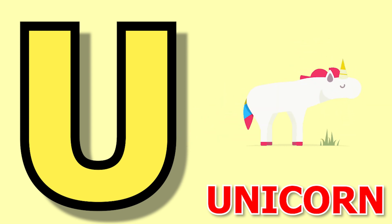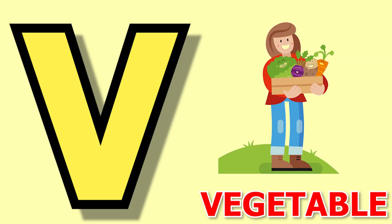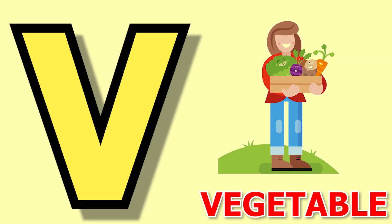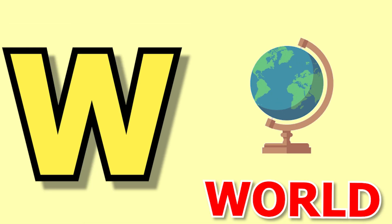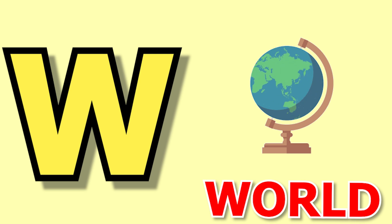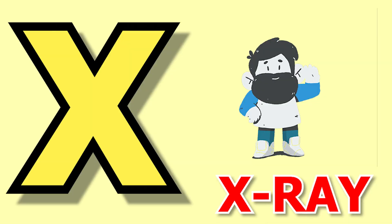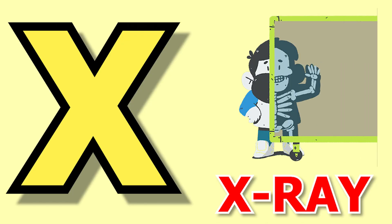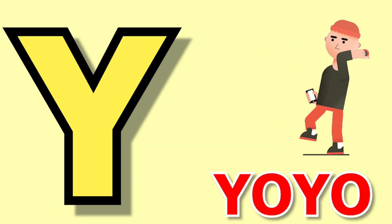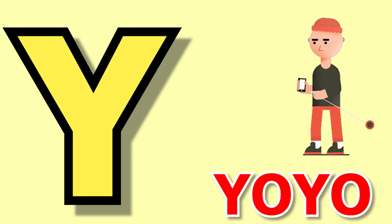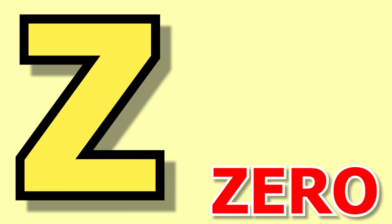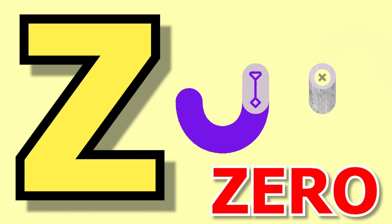U for unicorn, unicorn means unicorn. V for vegetable, vegetable means vegetable. W for world, world means dunya. X for x-ray, x-ray means x-ray. Y for yo-yo, yo-yo means yo-yo. Z for zero, zero means shunye.